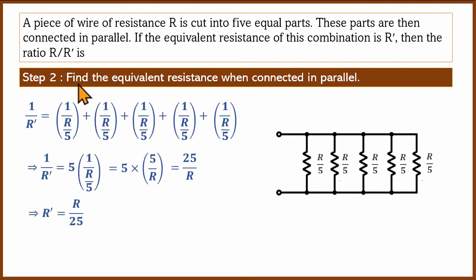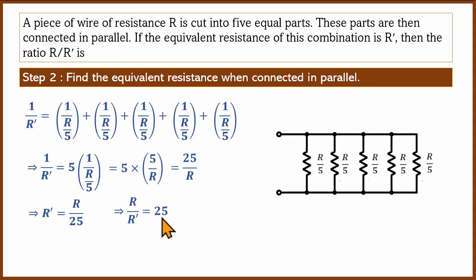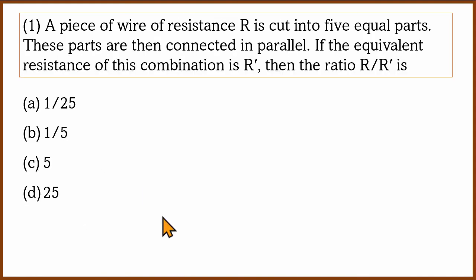The question asks for the ratio of original resistance R to the new equivalent resistance R'. Since R' = R/25, the ratio R/R' is 25. So the ratio is 1:25, and the correct option is D. Thank you for watching. See you soon with a new video. Bye.